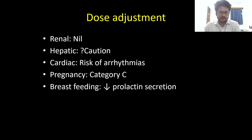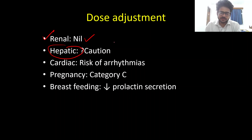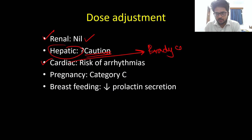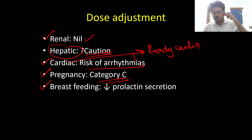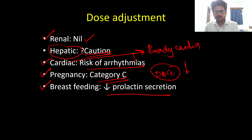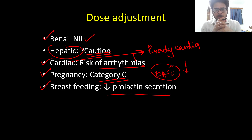For dose adjustments: since ropinirole is significantly metabolized only in the liver, no significant dose adjustments are needed for renal impairment, but it should be used with caution in severe hepatic impairment. Dopamine agonists can cause bradycardia and brady-arrhythmias, so use with caution in patients at risk of cardiac arrhythmias. Pregnancy category is C — best avoided unless the risk-benefit ratio warrants it. In breastfeeding, ropinirole can reduce prolactin secretion as a dopamine agonist, thereby decreasing breast milk production. That concludes the discussion on ropinirole — next week we'll be discussing a new drug.